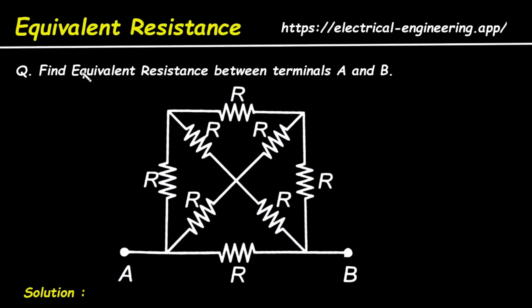Question: Find the equivalent resistance between terminals A and B. For this network, we have to determine its equivalent resistance between terminals A and B.